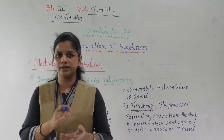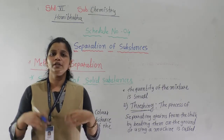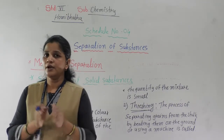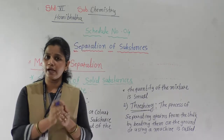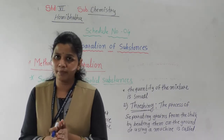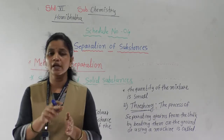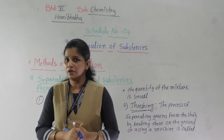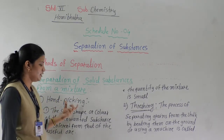Solid, liquid, gases — these are all the states of matter. When more than two substances are both solid, like the rice and stone example, both are in the solid state. So how do we separate such substances? Both substances are solid and form a mixture, and these are the methods we are going to learn now. The first method is hand picking.